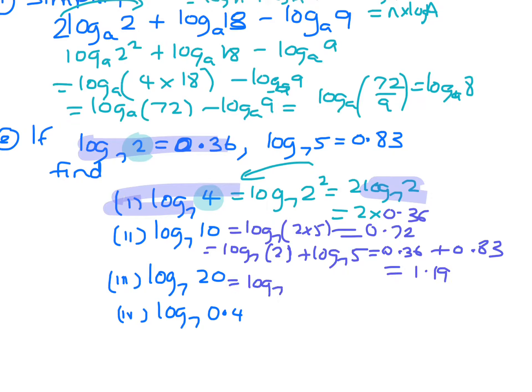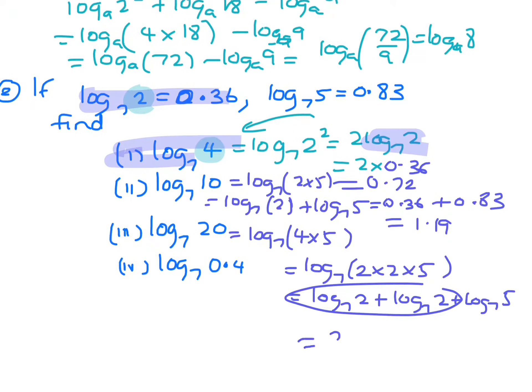Okay, this is log 7 20. That's 4 times 5. So you could write it as log 7 of 2 times 2 times 5. So you could do it as log 7 of 2 plus log 7 of 2 plus log 7 of 5. You could have also done that as 2 lots of log 7 2. That's another way of looking at it.